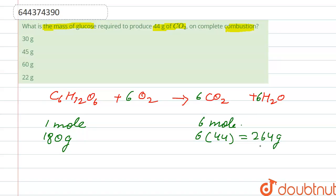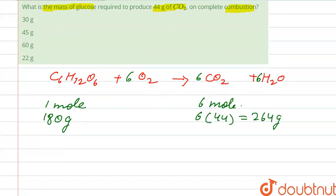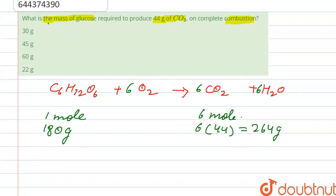So let's see, in this question it is asked that the mass of glucose required to produce 44 grams of CO2. So here 264 grams of CO2 is obtained by 180 grams of glucose.